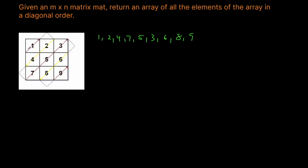Essentially, what we want to do is start at the top left and try going up one and right one, until we're outside of the bounds of our matrix. Then we simply drop the current row down by one, because the column will still be valid but the row will be off. Then we go down this time, going down and to the left, hitting the four — the four is going to try to go down and to the left, but obviously we'll be outside of bounds, so we need to reset.